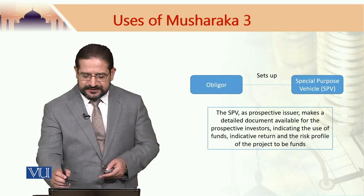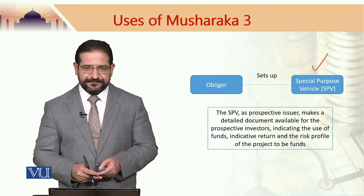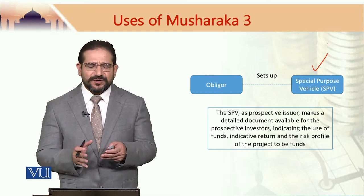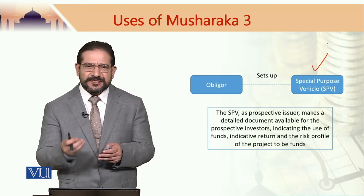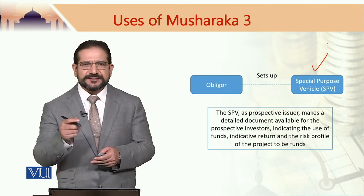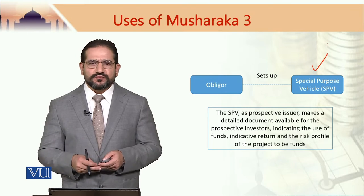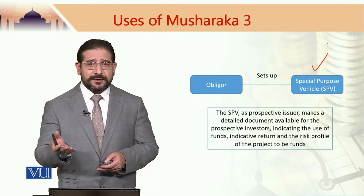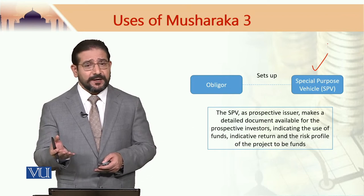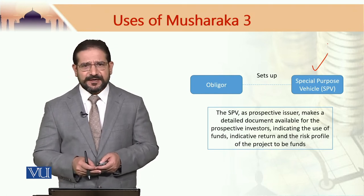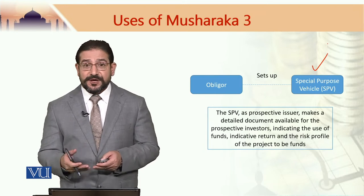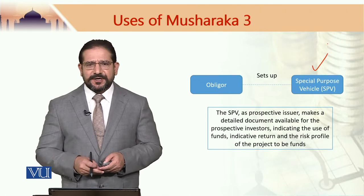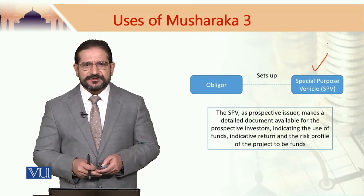As step one, the Obligor sets up a Special Purpose Vehicle, we call it SPV. It is a company which does not have any business of its own; it is set up for a special purpose. In this case, the SPV actually manages the Sukuk assets on behalf of the Sukuk holders. However, this could be set up in an offshore jurisdiction. Most of the SPVs in the context of Islamic banking and finance and Sukuk structuring are actually set up in an offshore jurisdiction, primarily because it would offer tax benefits to the Sukuk holders.